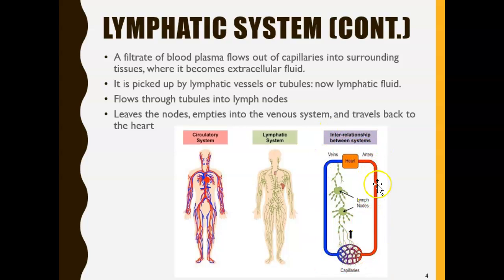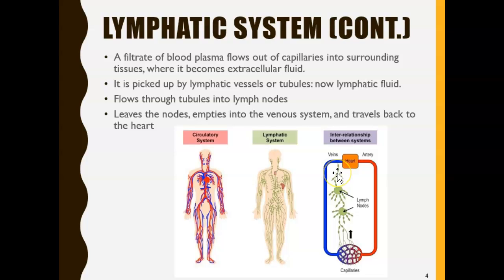As blood goes from an artery to a vein, there's an exchange happening at the capillary. Some of the fluid from the blood — known as lymph — comes out and gets filtered through the lymph nodes. The lymph node is like a checkpoint: it checks for toxins, filters them out, and then the fluid goes back to the vein and circulates again. The lymph nodes are those big blobs you see here, and the lymphatic vessels are those green lines. The blood plasma's liquid portion — also known as extracellular fluid — comes out, goes through lymph nodes, gets checked, and then returns to the vein.